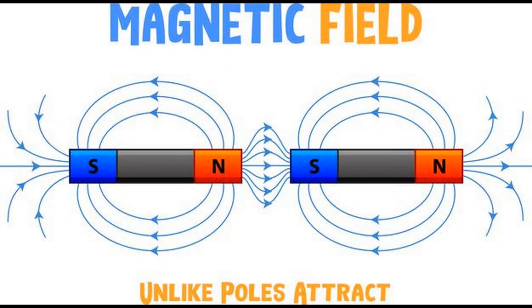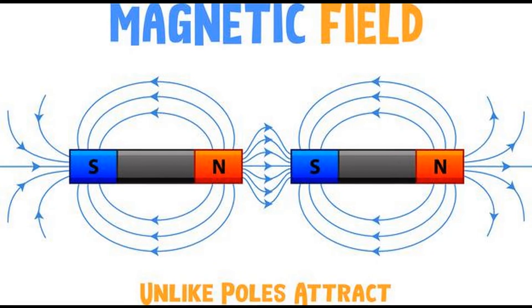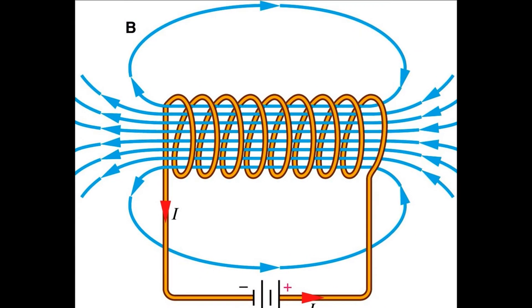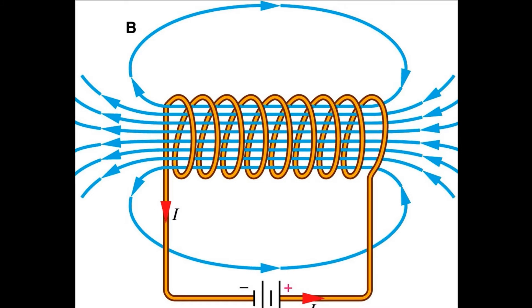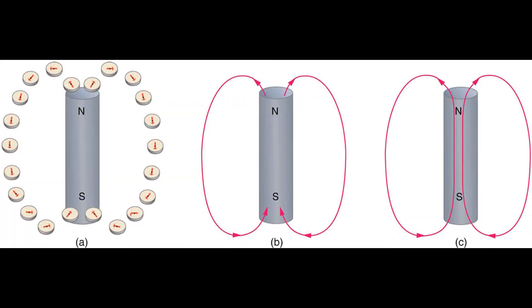When unlike poles are put together, the field between two adjoining poles is greatly strengthened. Lines of force run in straight lines between them. The field curves almost as if a magnet existed between the poles.